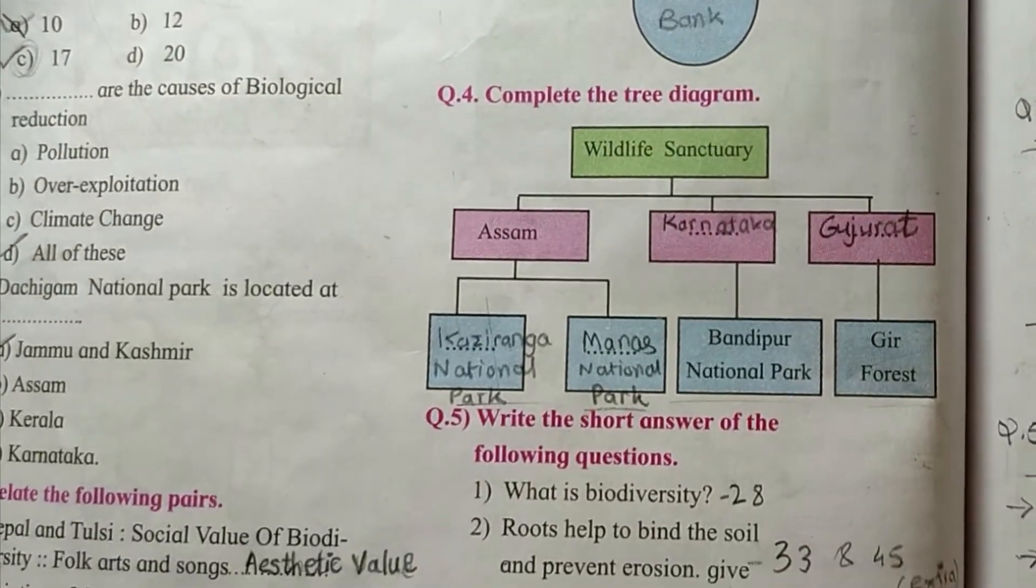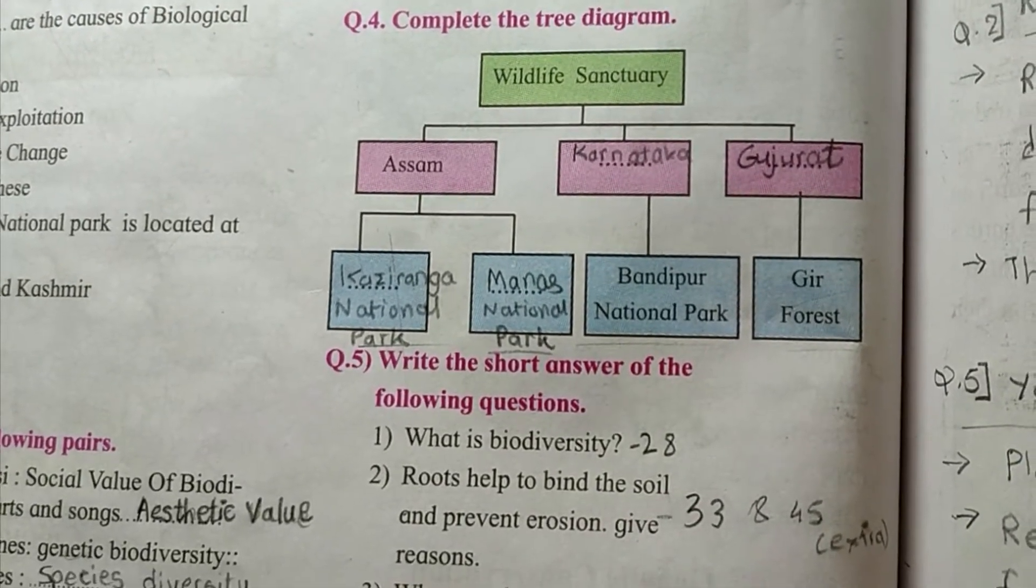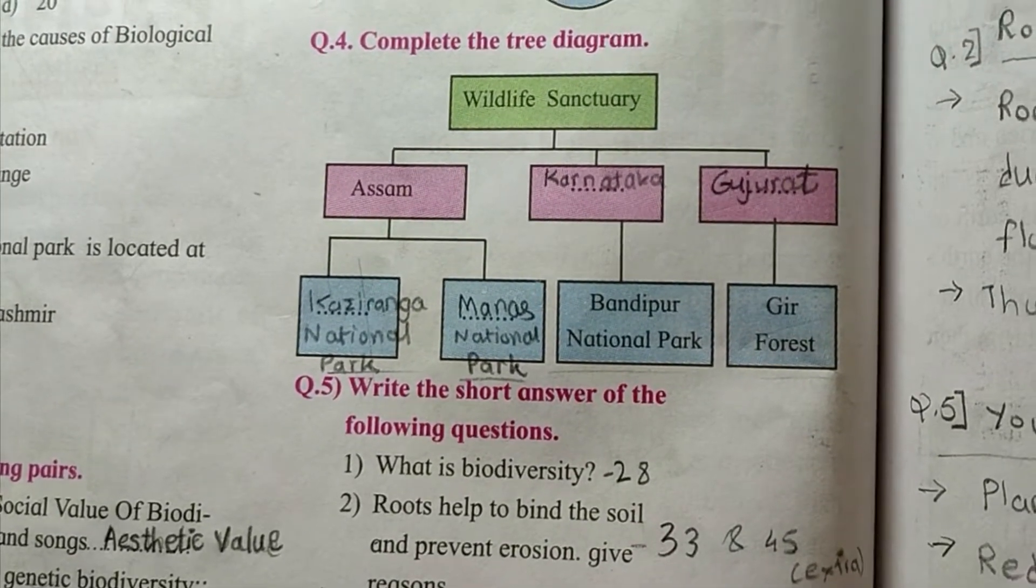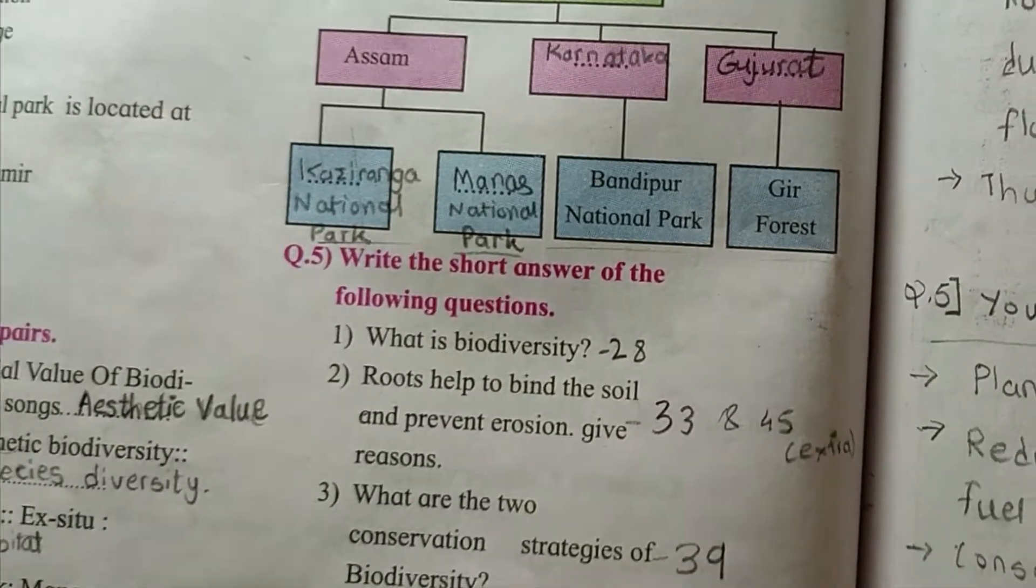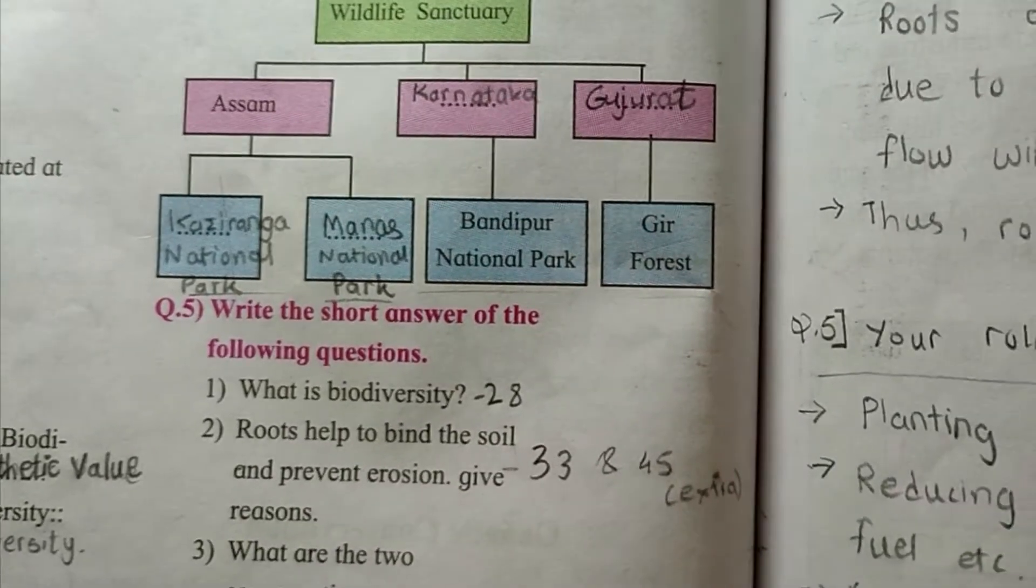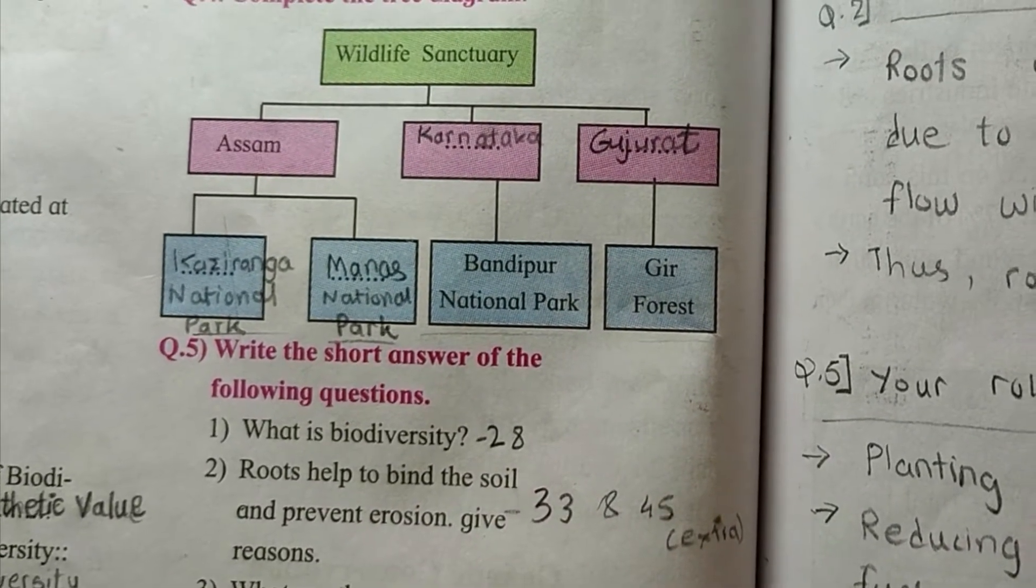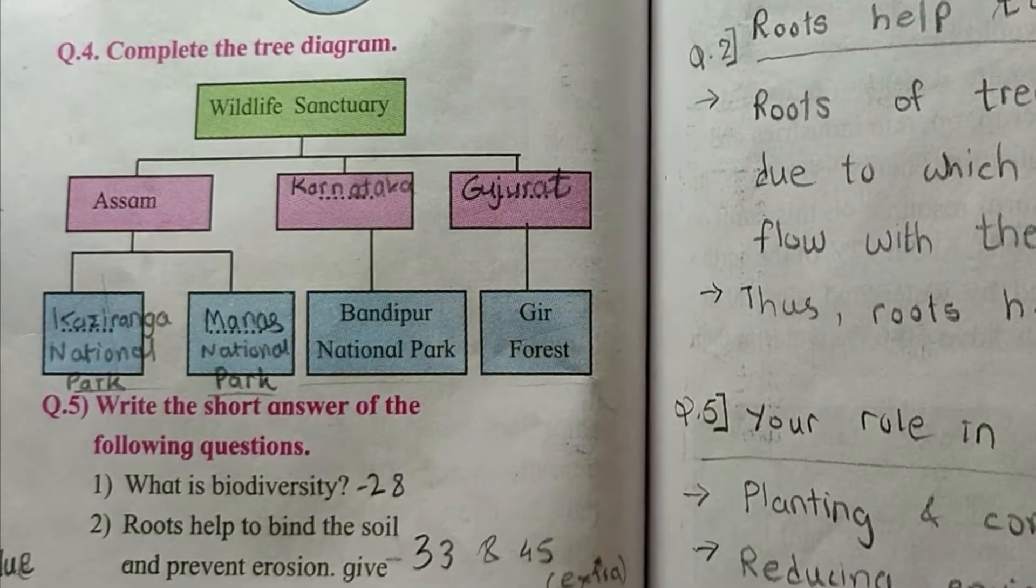Question four, complete the tree diagram. Wildlife sanctuary, the first is Assam, already given. In it, Kaziranga National Park is the first box, second, Manas National Park. Next, Karnataka, Bandipur National Park and Gujarat, Gir Forest.